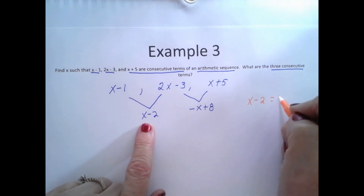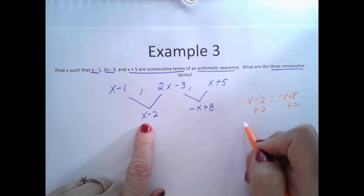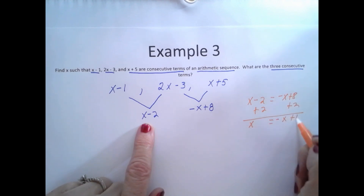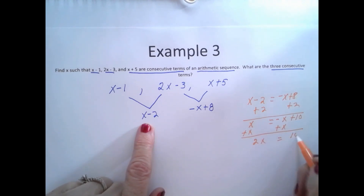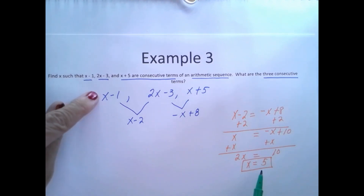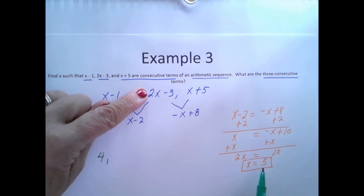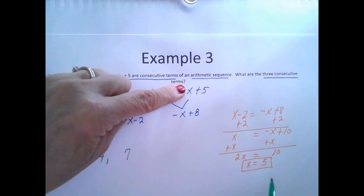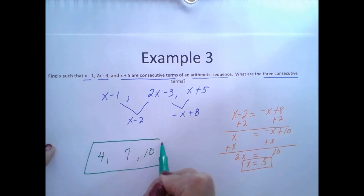Setting the common differences equal: X minus 2 is equal to negative X plus 8. Adding 2 to both sides: X is equal to negative X plus 10. Adding X to both sides: 2X is equal to 10, so X is equal to 5. Now let's find the three consecutive terms by substituting 5 in for each X: 5 minus 1 is 4, 2 times 5 minus 3 is 7, and 5 plus 5 is 10. We can see that from 4 to 7 I added 3, and from 7 to 10 I added 3. These are the three consecutive terms.